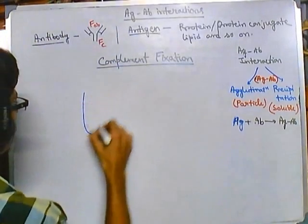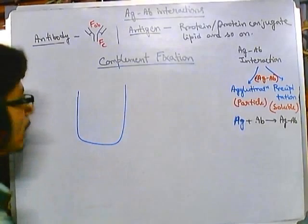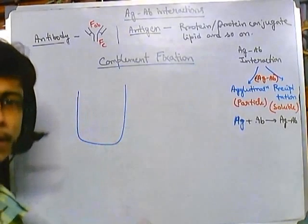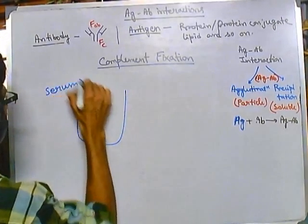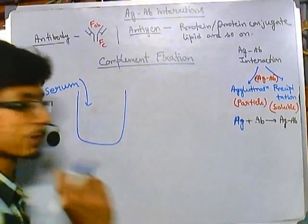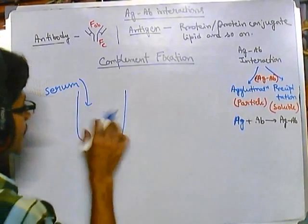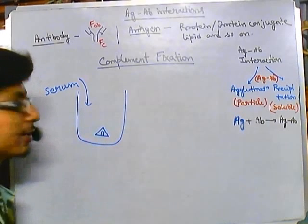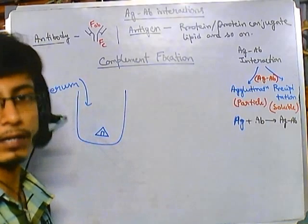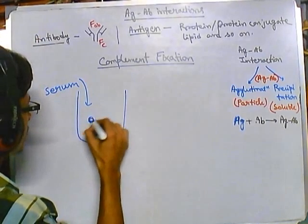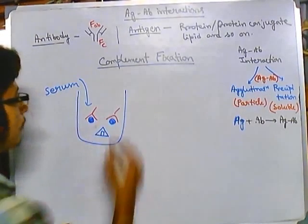Let's assume this is our vial and inside it we have our sample. In this vial we have blood or serum — simply the serum sample. Inside the serum, complements are present. Also in this serum we can have antigen and antibodies present — varying in different cases.